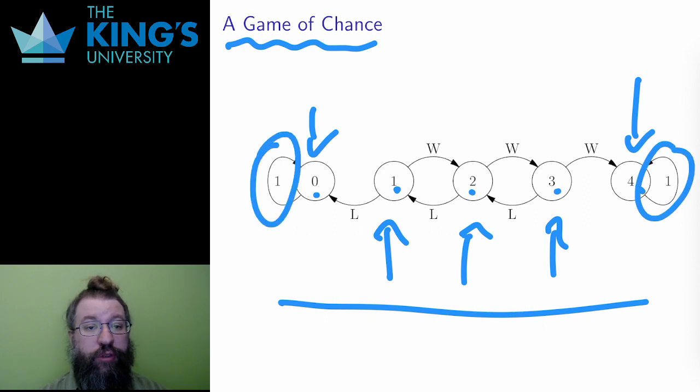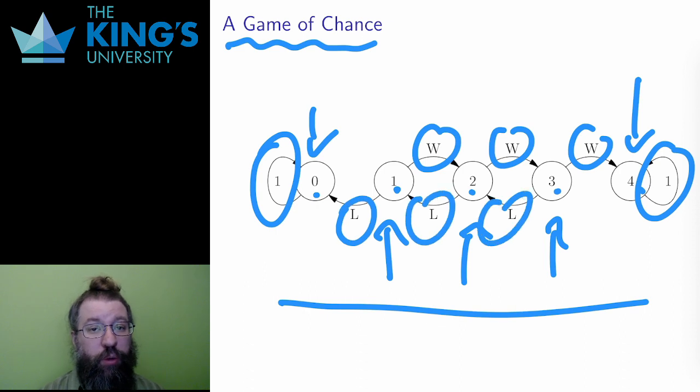In the Markov chain, this is represented by a probability one of staying at that vertex. For the middle three vertices, there is a probability of winning, going up a stake, and losing, going down a stake. W is the winning probability, and L is the losing probability.